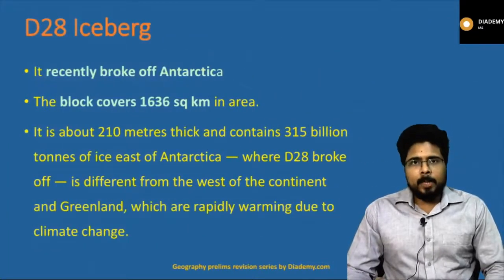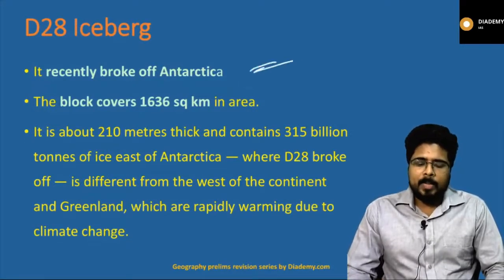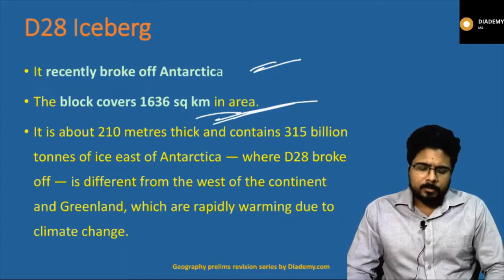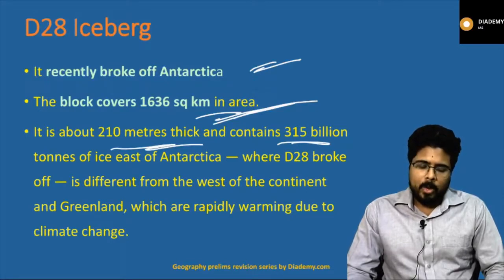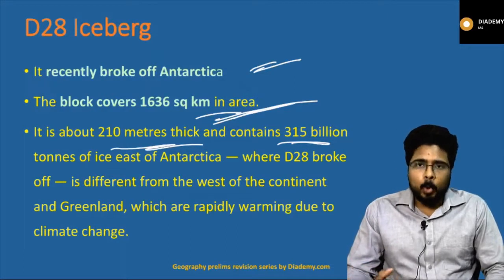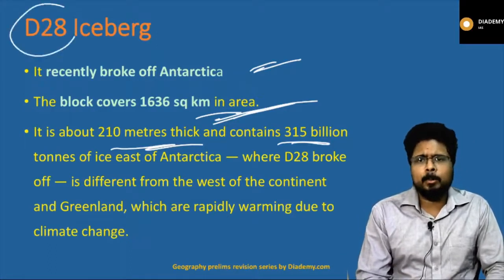D28 iceberg: last year, the D28 iceberg broke off from Antarctica. It covers approximately 1.6 square kilometers, is about 210 meters thick, and contains 315 billion tons of ice. It broke off from the east of Antarctica. This is significant because generally the west of the continent is warming more rapidly than the east, but this iceberg broke off in the east.